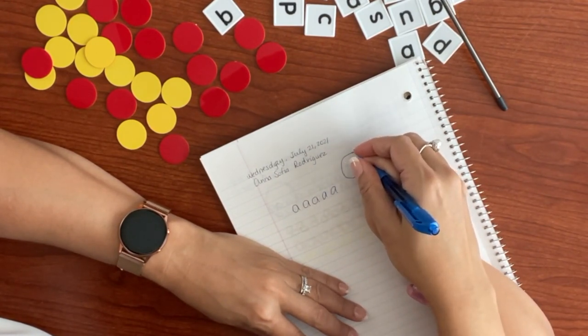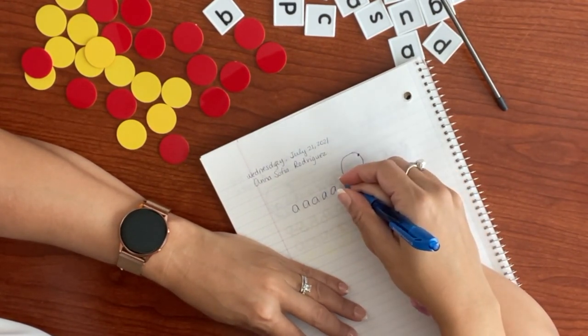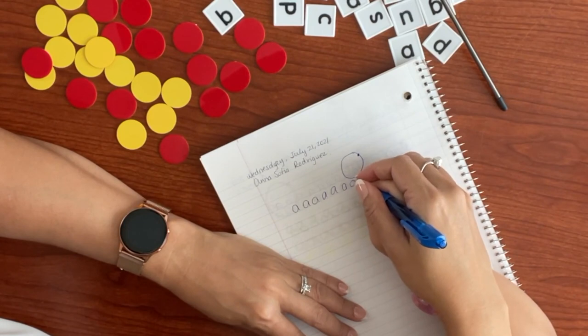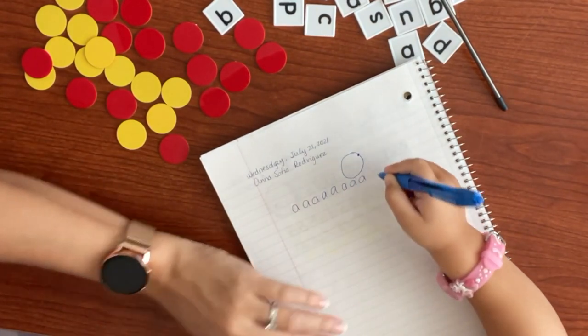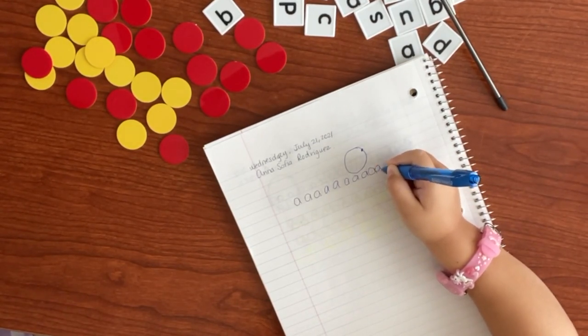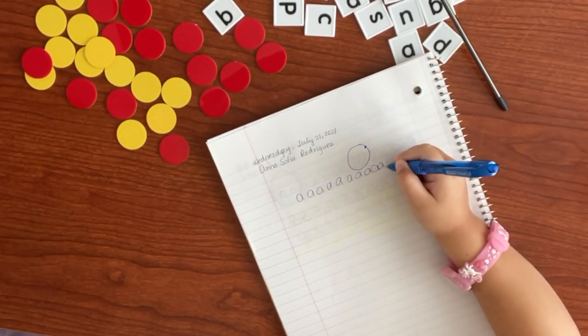Remember here's a circle. Here is two o'clock right here. So you're going to start there. Up, around, and down. Up, around, down. Up, around, down. Okay? You practice. Up, around, down. Up, around, down. Good. Yes. Keep going.